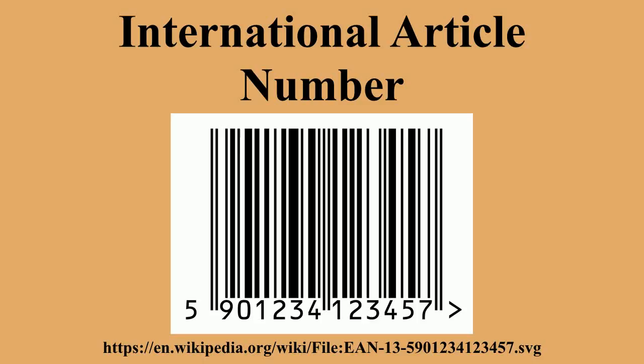The International Article Number is a 13-digit barcode symbology, which is a superset of the original 12-digit Universal Product Code, developed in 1970 by George J. Laurer. The EAN-13 barcode is used worldwide for marking products often sold at retail point of sale. It encapsulates a two-digit or three-digit number system, in contrast with UPC-A's one-digit number system. EAN-13 barcodes with number system 45 or 49 are known as Japanese Article Number.